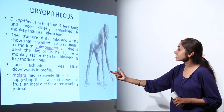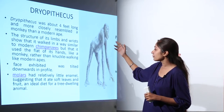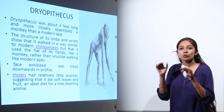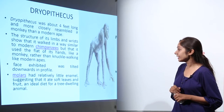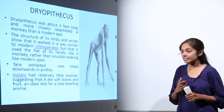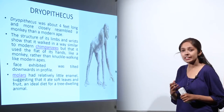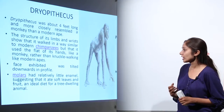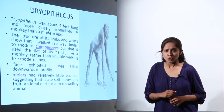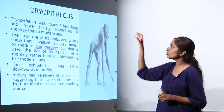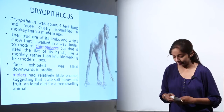The face was tilted downward in profile, and the molars had relatively little enamel, suggesting that it ate soft leaves and fruit — an ideal diet for a tree-dwelling animal. So these are a few features of Dryopithecus.